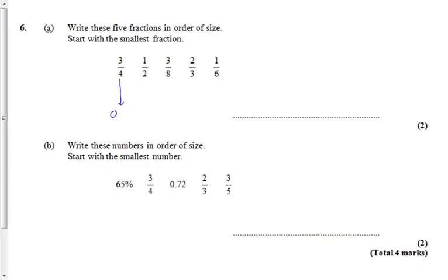So three quarters, we should know, is 0.75. With a calculator, it's really easy to do 3 divided by 4. Half is 0.5. Three eighths comes out as 0.375, using our calculator as 3 divided by 8. Two thirds comes out as 0.6 recurring, which is important to include that dot above the 6.